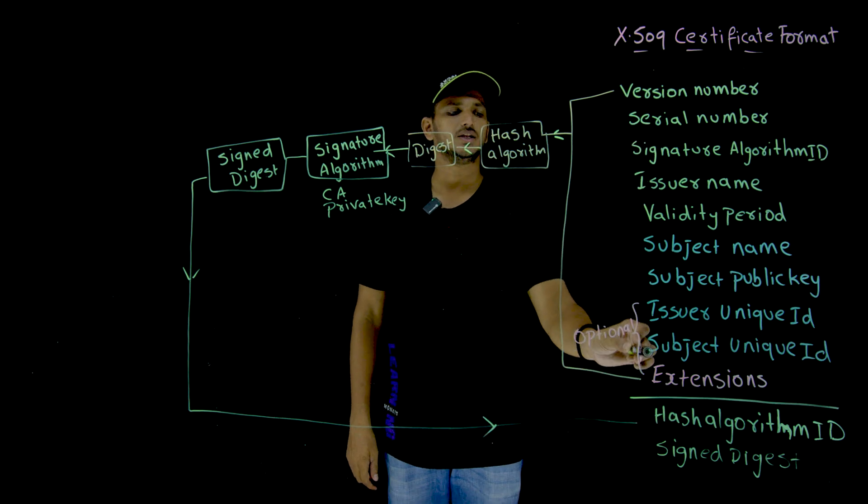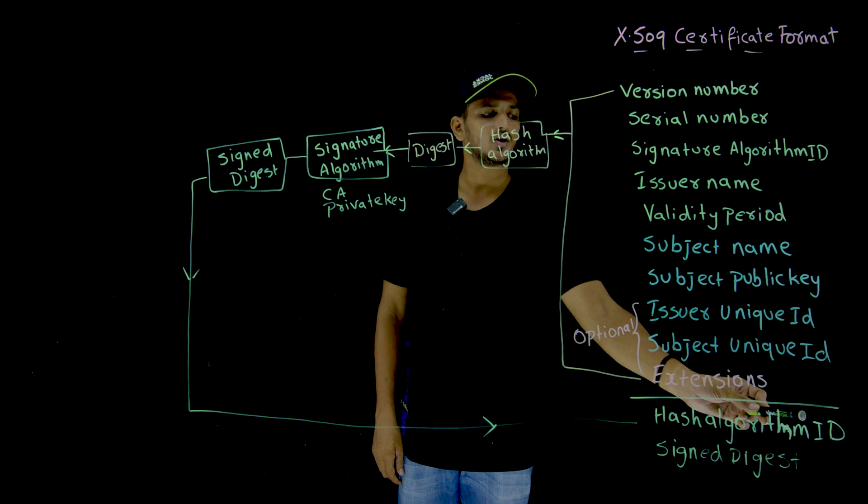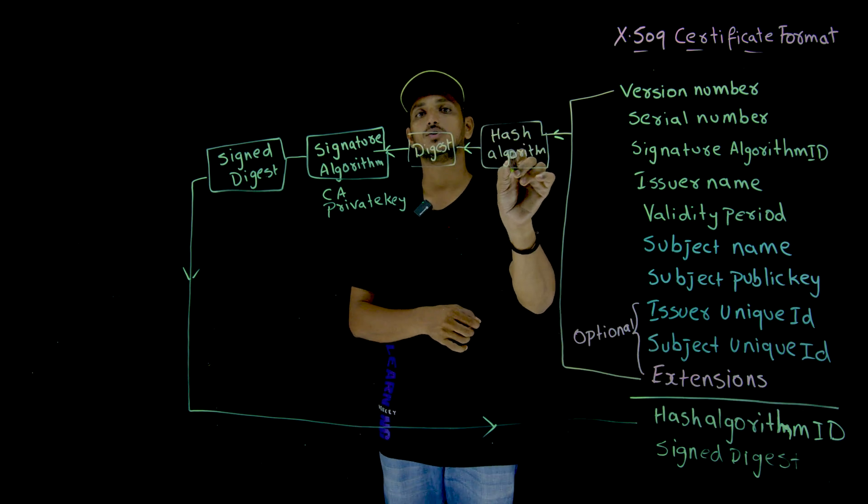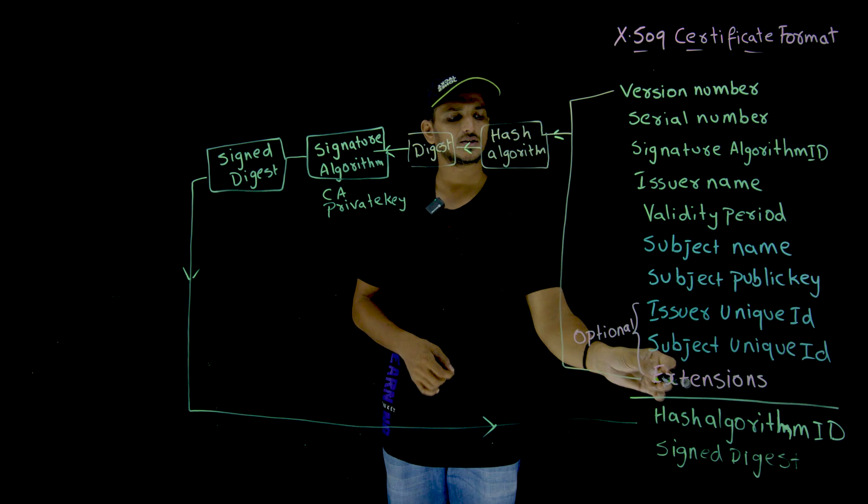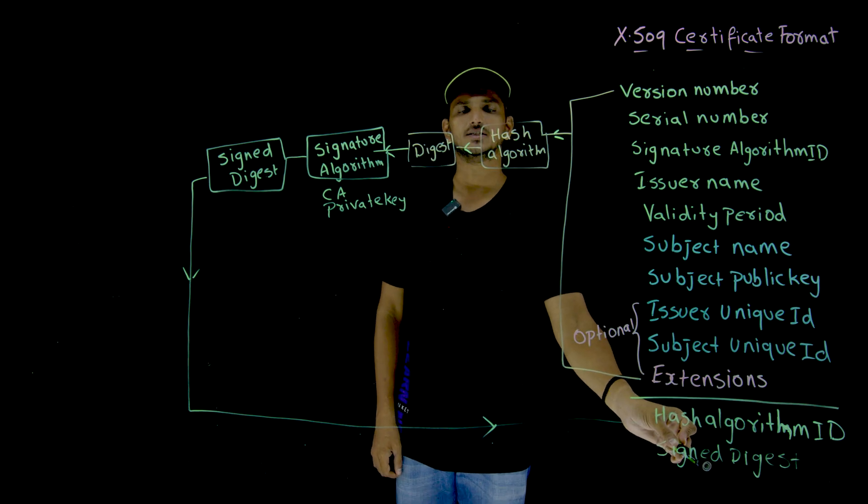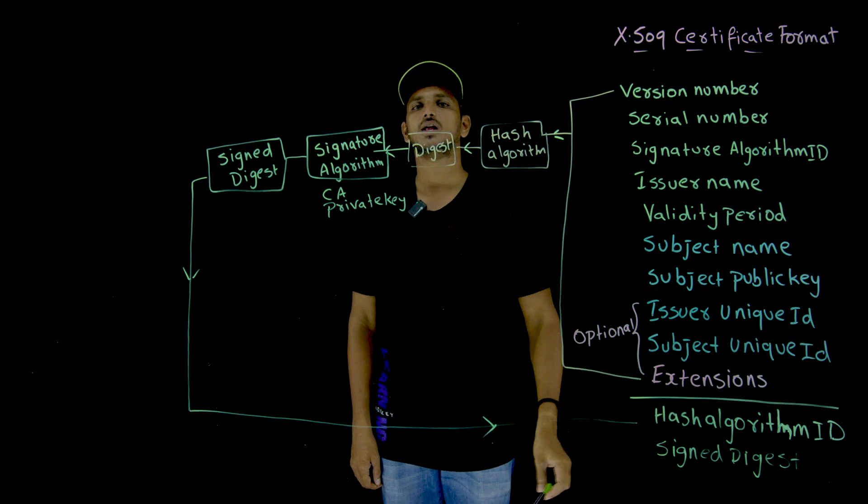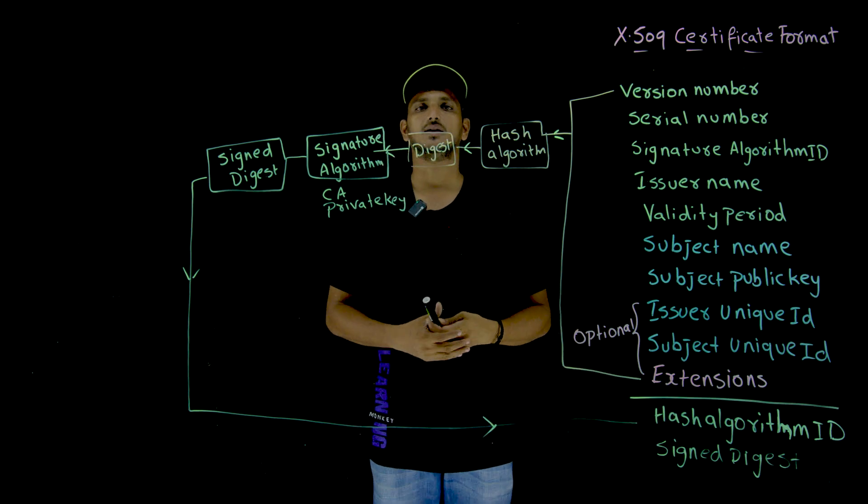This signed digest is going to be stored here. Again along with this information, hash algorithm ID is also provided. Which hash algorithm we are going to use. That hash algorithm ID and signed digest. This entire data, we call it as digital certificate, public key digital certificate.